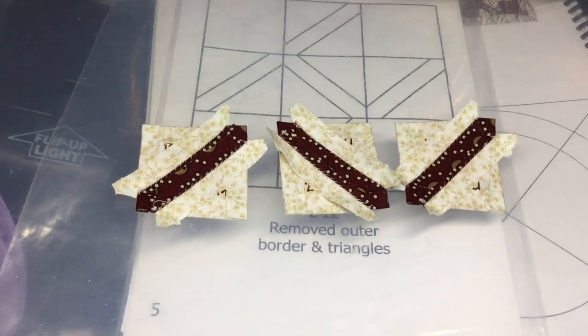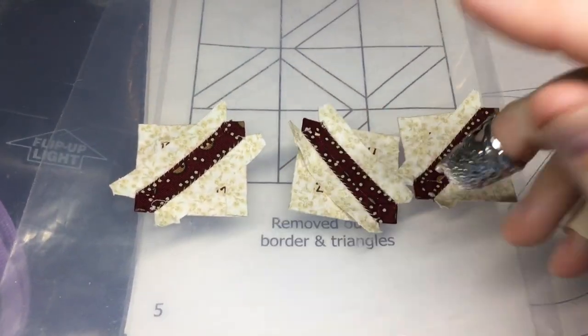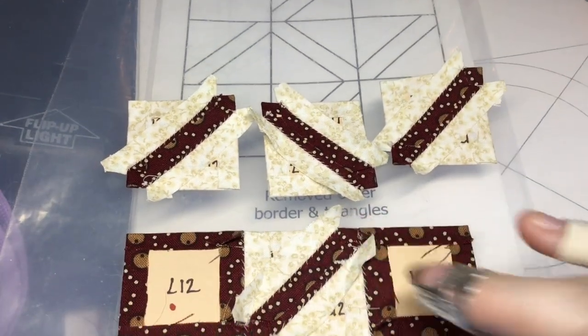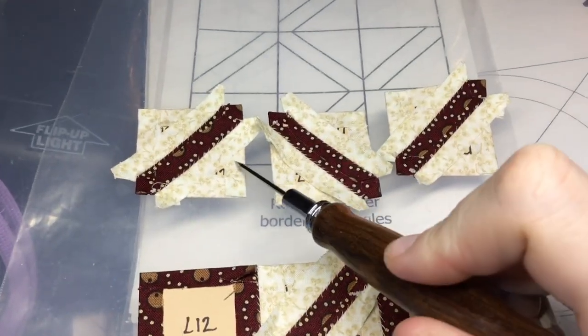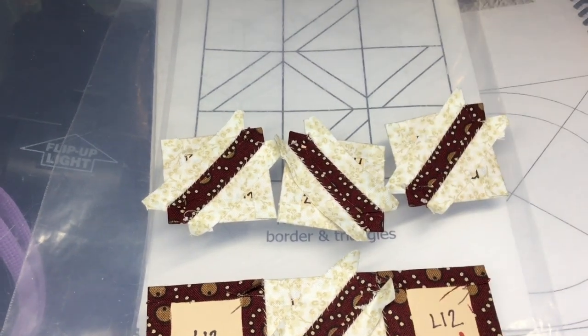So I got the three squares assembled for this center row, and that's my bottom row. So I'm going to put these together so that it makes the middle row.